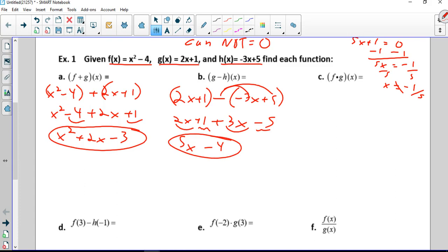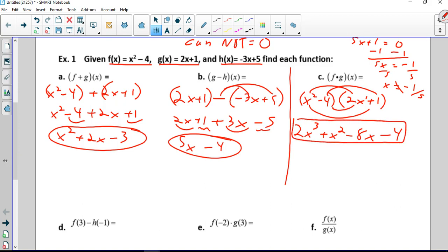f of x times g of x. f of x is x squared minus 4, here's where the parentheses count. g of x is 2x plus 1. We're going to FOIL. First times first, outer, inner, last. So x squared times 2x is 2x cubed. Outer, 1 times x squared is plus x squared. Inner, negative 4 times 2x is negative 8x. And last, negative 4. Notice in this case nothing combines. That's my answer. I have a cubic term, a square term, a linear term, and a constant.